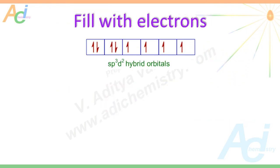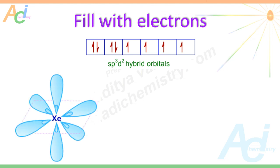Now let us fill the electrons into these sp3d2 hybrid orbitals. There are 8 electrons. Filling follows Pauli's exclusion principle and Hund's rule of maximum multiplicity. Since the hybrid orbitals are degenerate, each orbital must be filled with one electron first, then pairing is allowed. The six hybrid orbitals are filled with one electron each; the two remaining electrons then pair up in the two axial orbitals. Thus, the equatorial orbitals are half-filled while the axial orbitals are fully filled.